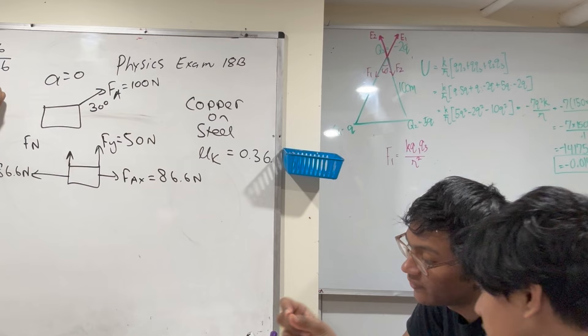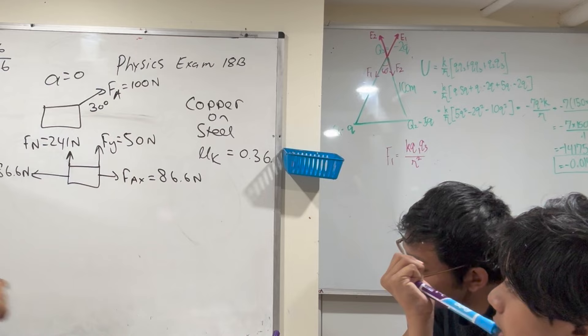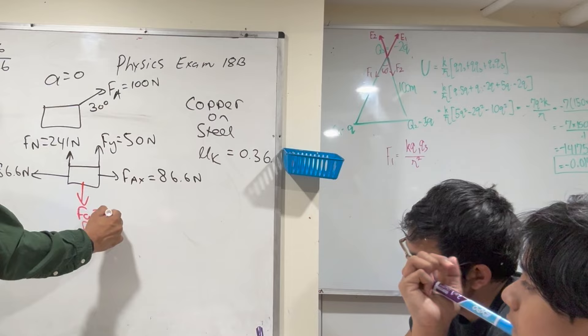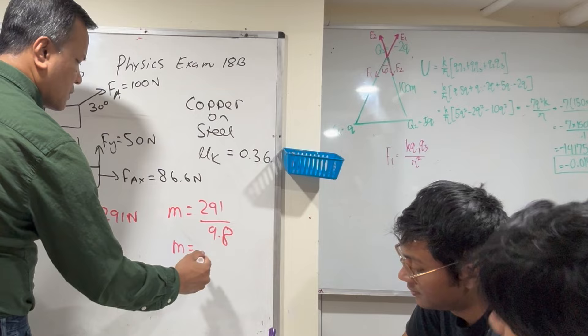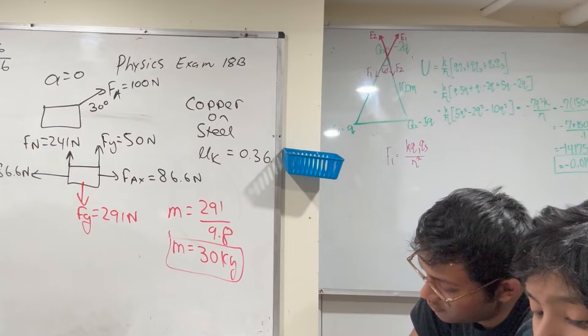So about 241 Newtons — that's pretty big. Would you be able to tell me the weight of the box? 291.6. Would you be able to tell me the mass of the box? 29.6 — you mean 30. So the mass of the box is 30 kilograms.